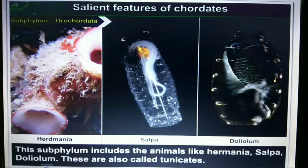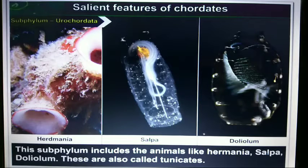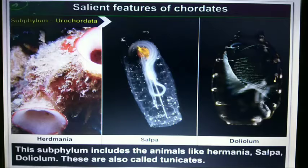The first subphylum is Urochordata. The examples of Urochordata are Herdmania, Salpa, and Doliolum. This subphylum includes animals like Herdmania, Salpa, and Doliolum.